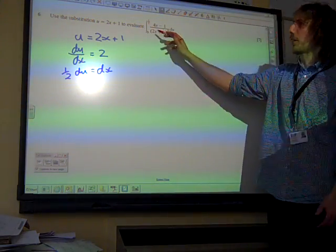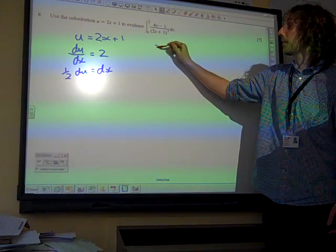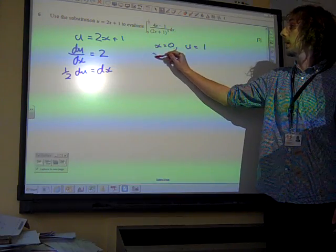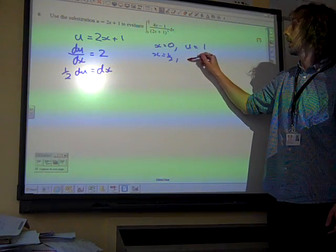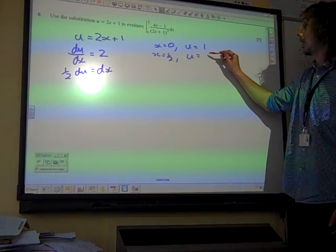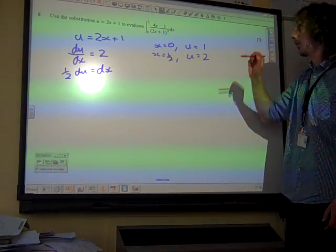And also we've got the limits to sort out. If x equals 0, u is 1. If x equals a half, then we've got u would be a half times 2 plus 1 is going to be 2. So we're going to change the limits as well.